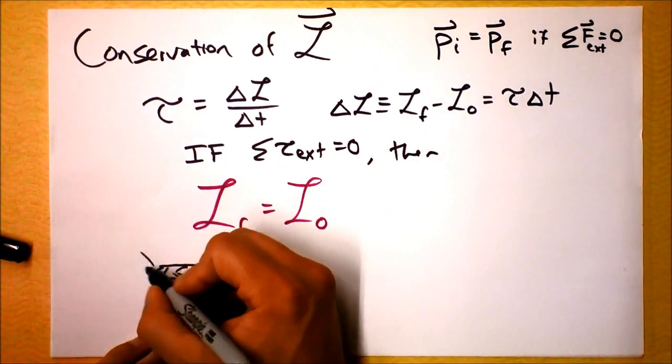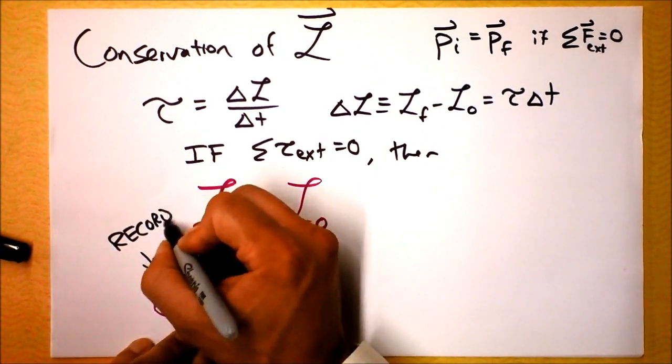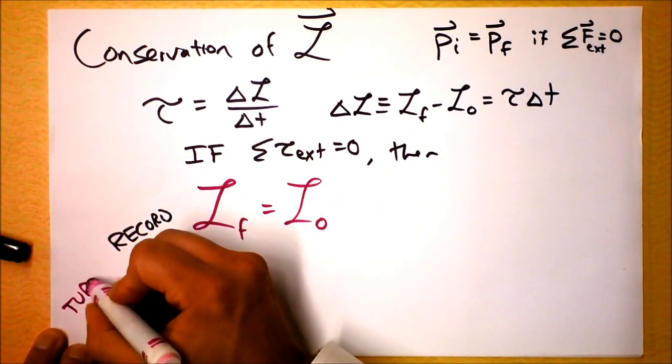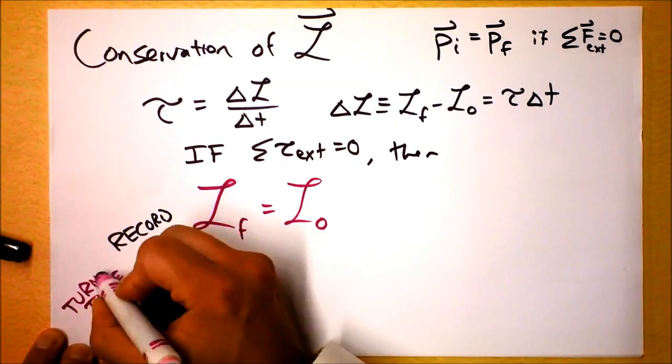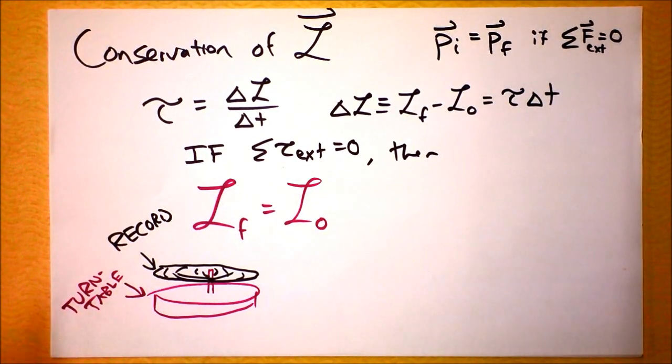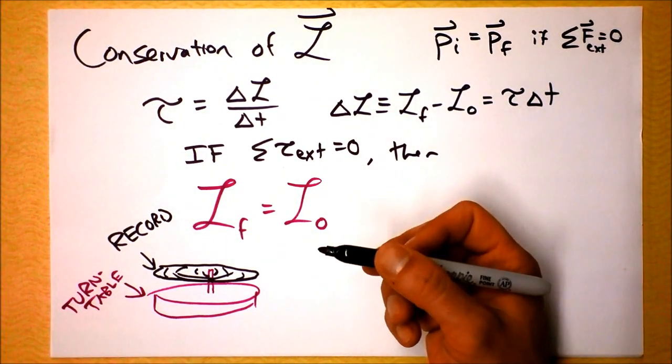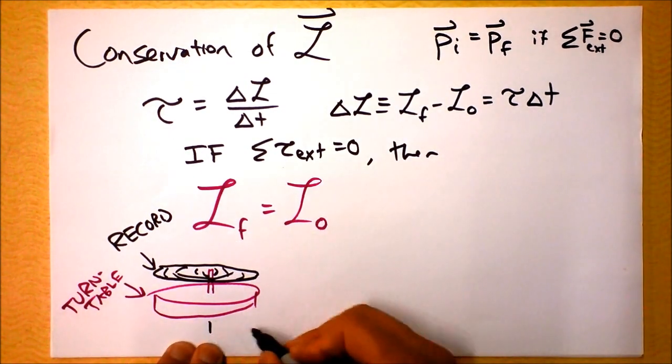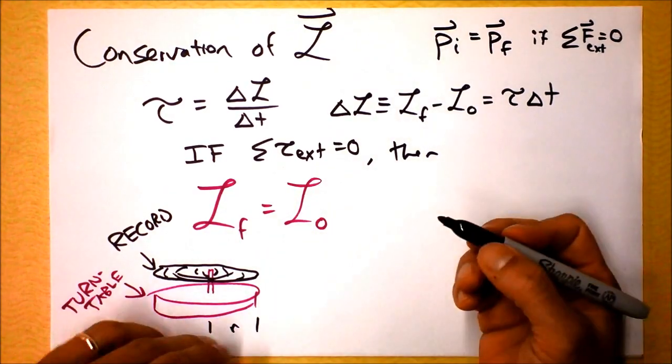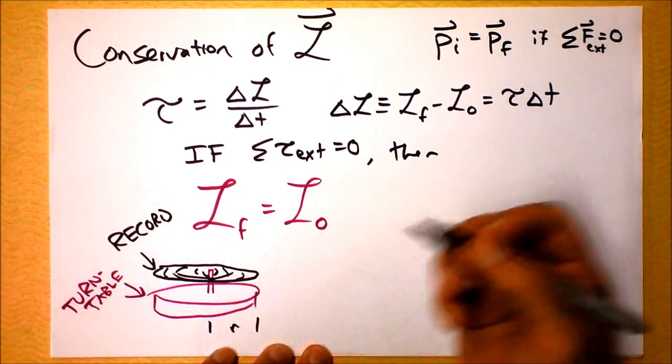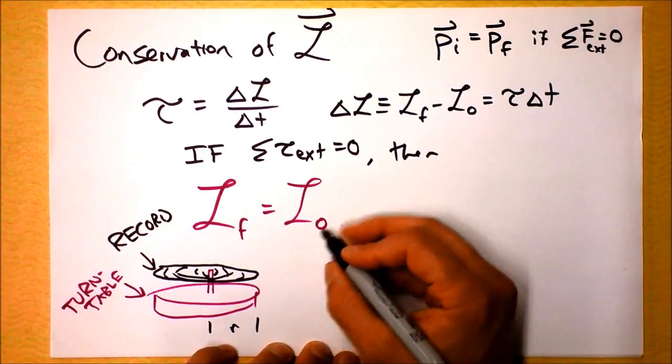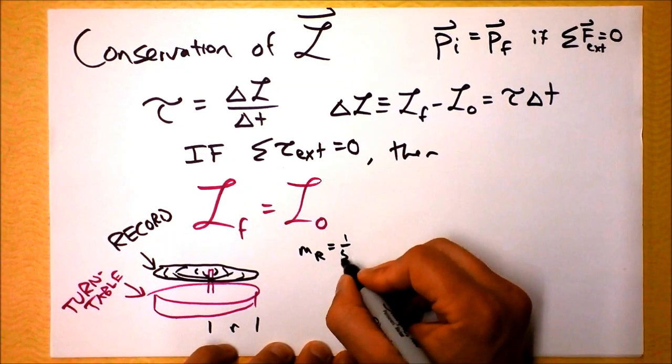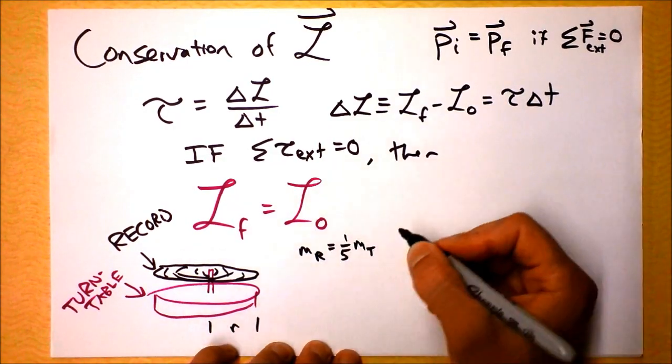And the record has less mass than the turntable, but it has an identical radius. We can define this as the radius of the system. And I guess the record, I'm going to say, just for the sake of argument, that the mass of the record is one-fifth the mass of the turntable.